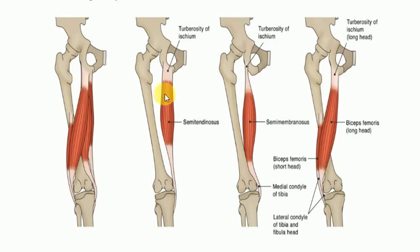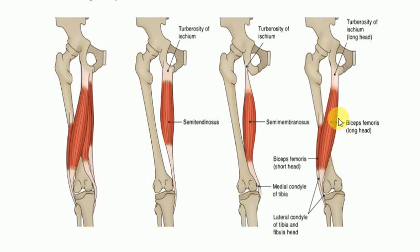The semitendinosus inserts on the medial tibial shaft — the larger bone is the tibia and the smaller one is the fibula. The semimembranosus inserts on the medial condyle of the tibia. The biceps femoris inserts on the lateral side of the head of the fibula — the smaller bone is the fibula, and this is the head of the fibula.